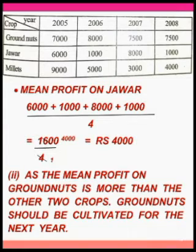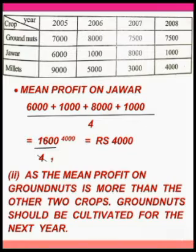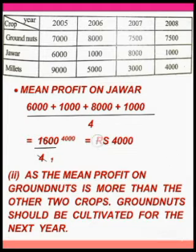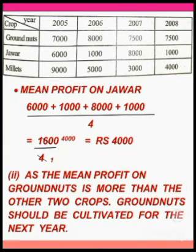We have calculated the mean profit of each crop — groundnut, Java and millets — over the 4 years. For the second question, which crop should be cultivated in the next year? Mean profit on groundnuts is 7500, mean profit on Java is 4000, and mean profit on millets is 5250. Since the mean profit on groundnuts is more than the other two crops, groundnuts should be cultivated for the next year.